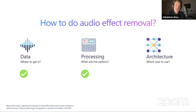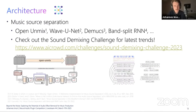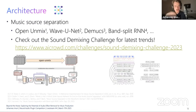The next step is how to choose the architecture. In the paper, we concentrated on modeling the inverse process of audio effects using, for example, the CRAFX architecture. It turned out that the music source separation models we investigated performed much better — we formulated the problem as a filtering problem, which yielded better results. We compared different architectures and you should definitely check out the sound demixing challenge for the latest trends in music source separation, as many of these architectures function as generic audio-to-audio transformation architectures.